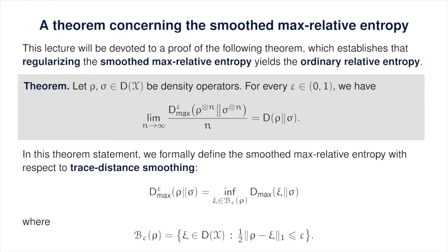You will notice that in the theorem statement, we are assuming that the model for both the smooth max relative entropy and the ordinary quantum relative entropy is a density operator — sigma tensor n on the left-hand side and sigma on the right-hand side — as opposed to an arbitrary positive semi-definite operator. The theorem is still true if we replace sigma by q for any positive semi-definite operator q, but that turns out to be a very simple corollary, explained at the very end of the lecture. For the sake of the proof, we will use the fact that sigma is a density operator.